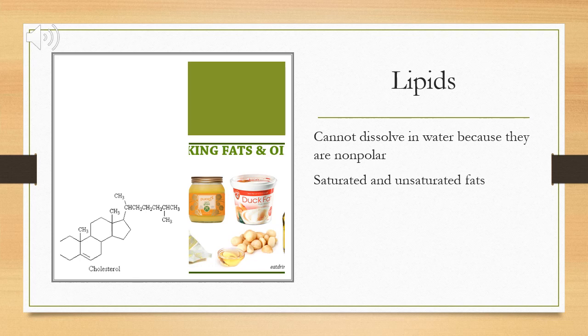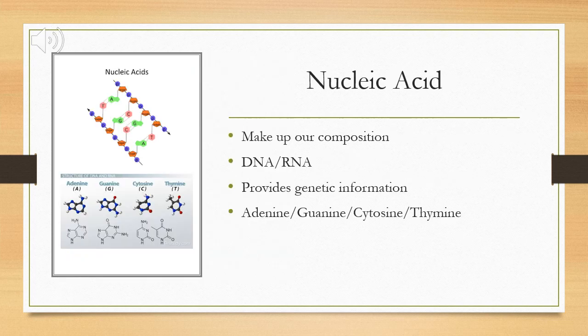Lastly, we have nucleic acids. Nucleic acids make up our composition. They join together in strands and combine to make DNA and RNA, which provides genetic information about the way we look and the way we are.